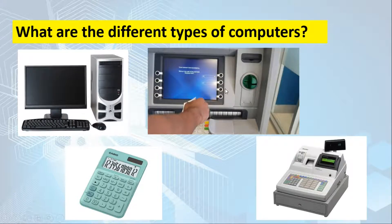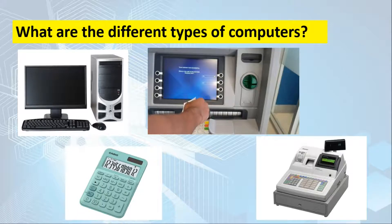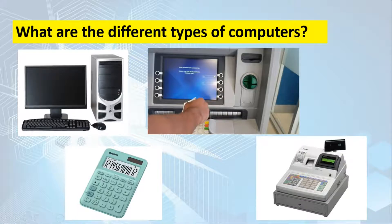We also have the ATM machine. It gives you money. Why is it considered a computer? Because it can store information of its users — its clients. Once you insert your card — whether a bank account card, credit card, or debit card — the ATM machine processes your information: your name, your account balance. Then it gives you money based on the amount you want to withdraw. Next, we also have the cash register, which functions just like a computer.